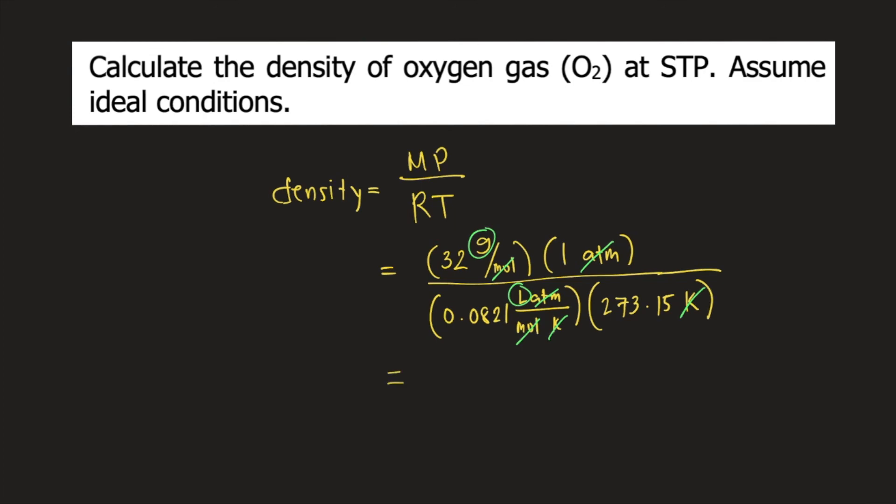If you solve for the density of oxygen gas at STP, this is equal to 1.43 grams per liter. And this is the answer to the question.